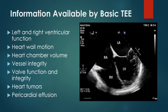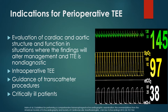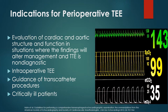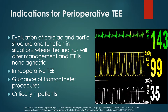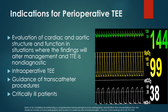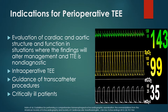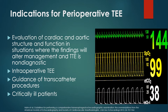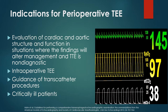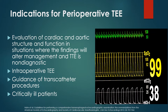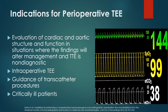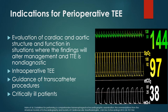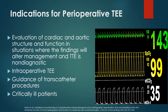Information available from basic TEE includes left and right ventricular function, LV-to-RV ratio, wall motion, heart chamber volume, vessel integrity (ascending and descending aorta), valve function, heart tumors, myxomas, vegetations, and pericardial effusion. Perioperative TEE is also indicated for evaluation of cardiac and aortic structure when TTE is non-diagnostic — such as assessing the left atrial appendage before cardioverting a patient with atrial flutter who is not on anticoagulation. For EP cases, transcatheter procedures, and critically ill patients, it's a very useful technique.